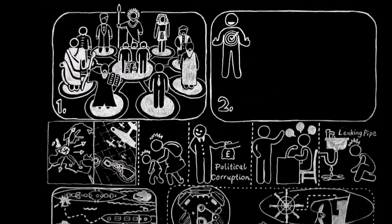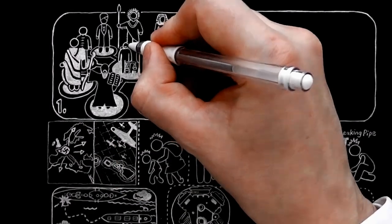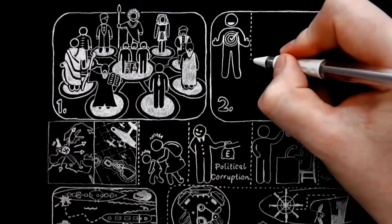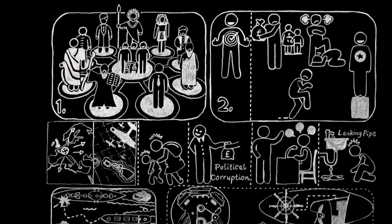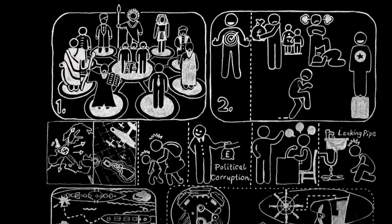What is the good of drawing up, on paper, rules for social behaviour, if we know that, in fact, our greed, cowardice, ill-temper, and self-conceit are going to prevent us from keeping them?